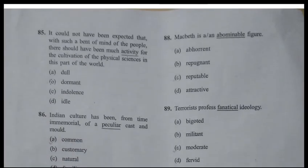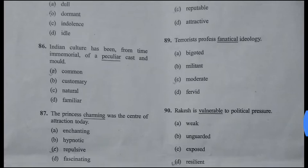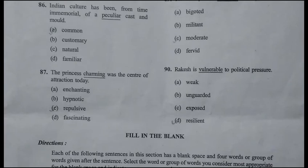Question 85: 'Activity' means being active, a state of creation. Its opposite is 'dormant,' meaning inactive or nishkriya. Question 86: 'Peculiar' means something very special or unique. Its opposite is 'common,' meaning normal or general — the answer is A. Question 87: 'Charming' means very attractive, akrashic. Its opposite is 'repulsive,' meaning not attractive.